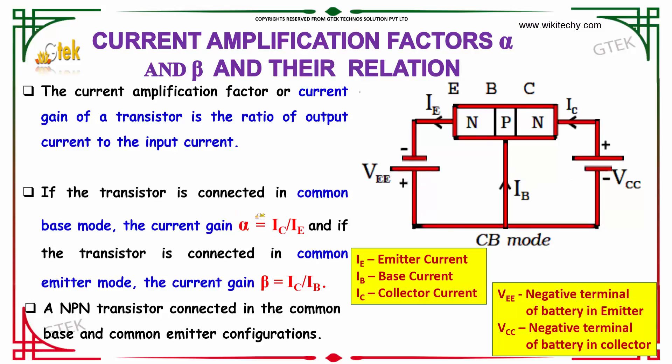If the transistor is connected in common base mode, the current gain alpha is equal to i-collector output divided by the input i-emitter.